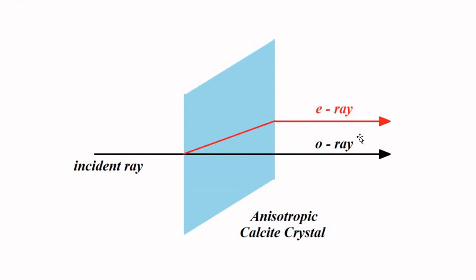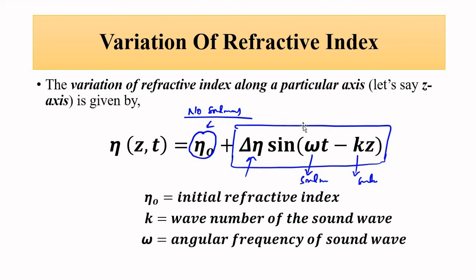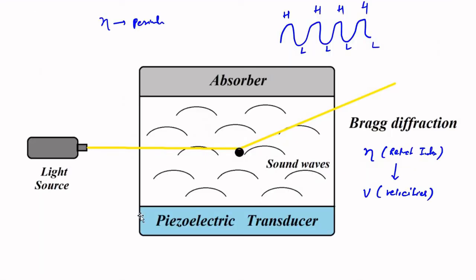This change in refractive index at different points brings about the property of birefringence, which leads to different components of the incident light traveling with different velocities and getting split. Depending upon the type of material — uniaxial, biaxial — and other associated properties, the phase shift values will be different. This is the whole principle of acousto-optic modulation: the combined effect of birefringence, sound waves, and Bragg diffraction brings about a change in the phase of the light wave.